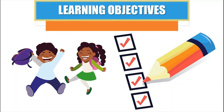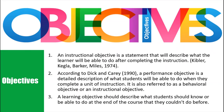Now that we've taken care of the basics and formalities, let's examine the learning objectives. The learning objective is critically important to the lesson. Your objectives are basically your goals — what you want students to be able to do at the end of the lesson, the skills you want them to attain, what you want them to understand and know. According to Dick and Crary, a performance objective is a detailed description of what students will be able to do when they complete a unit of instruction, also referred to as a behavioral or instructional objective.